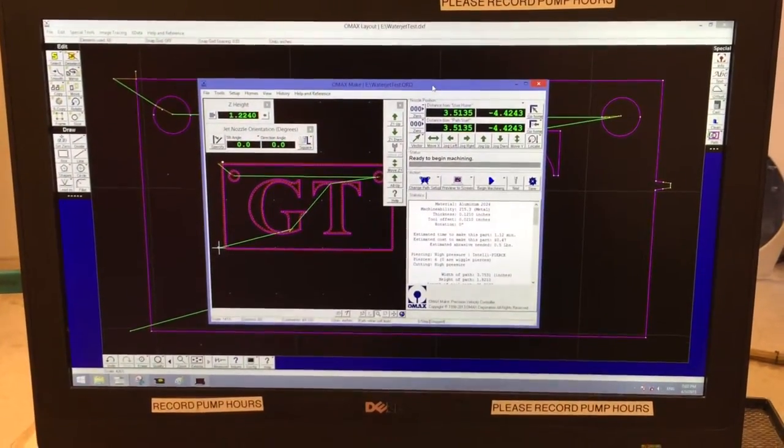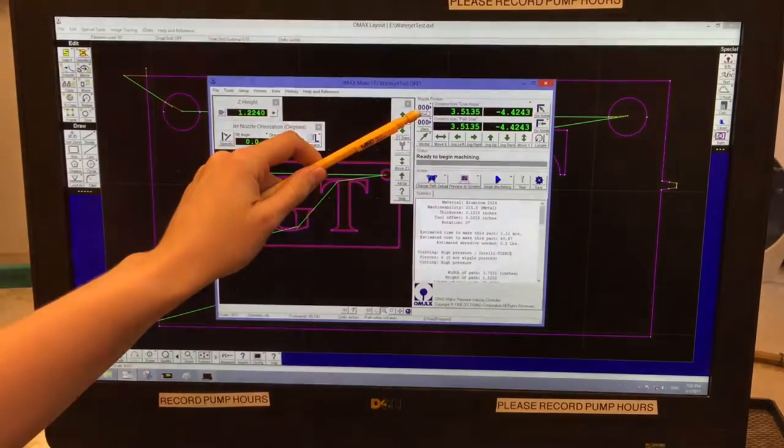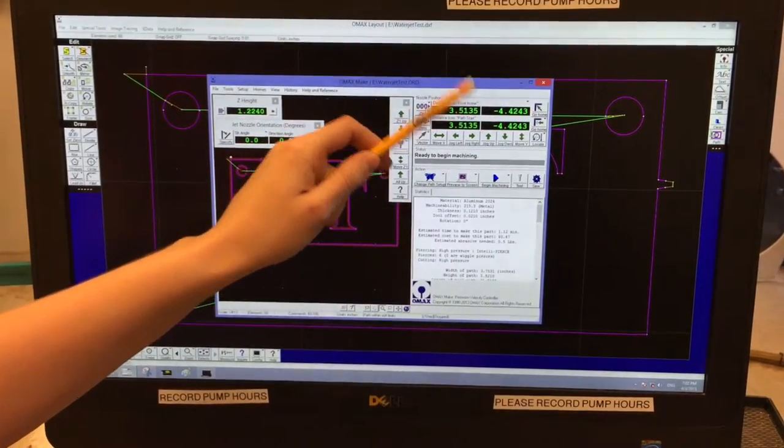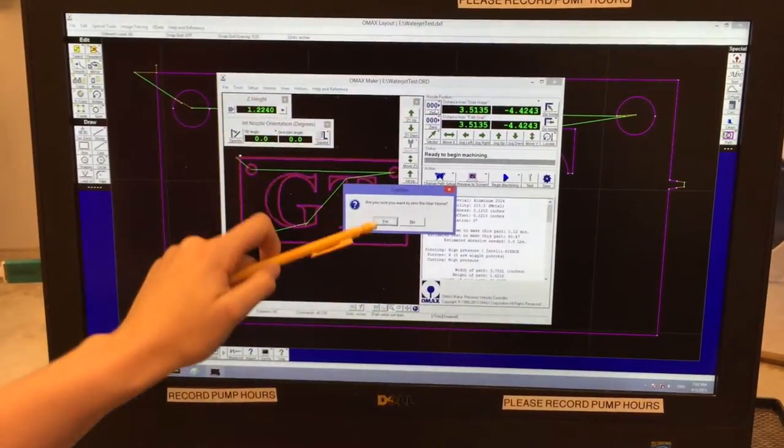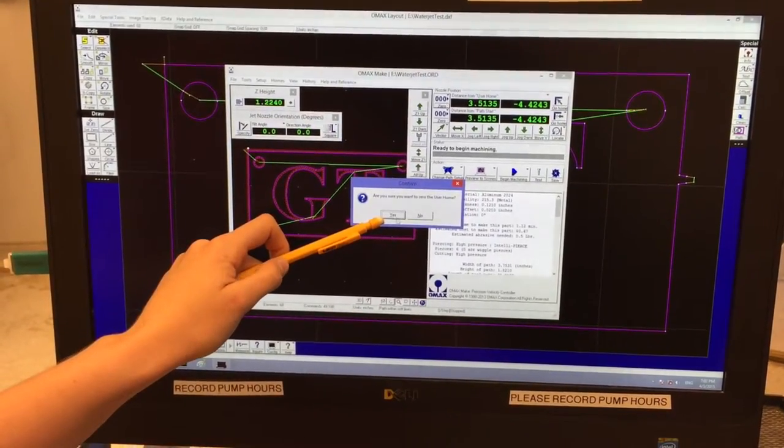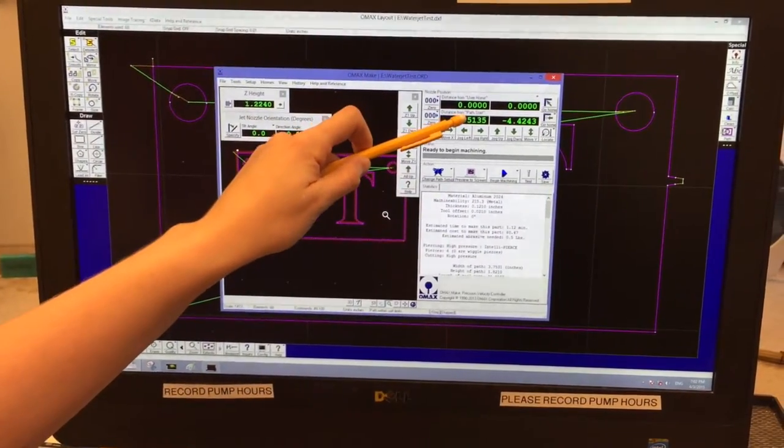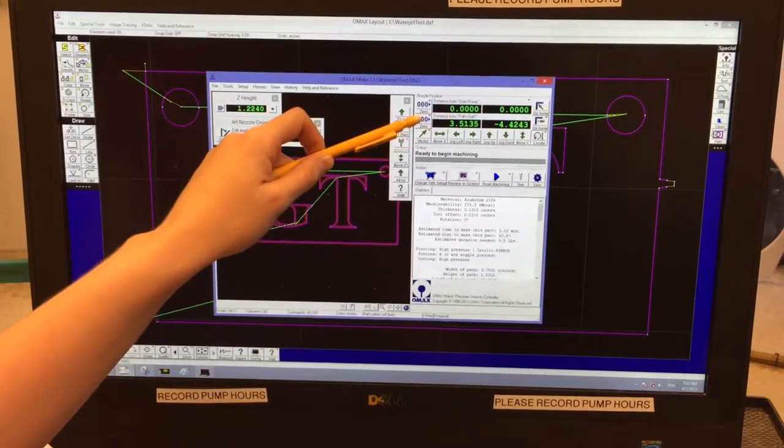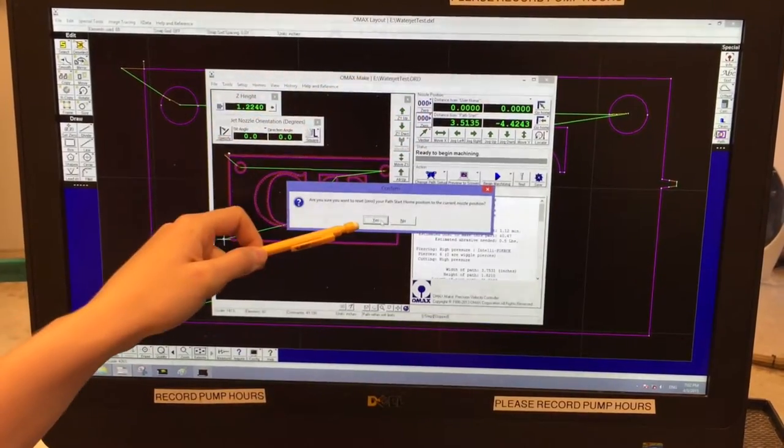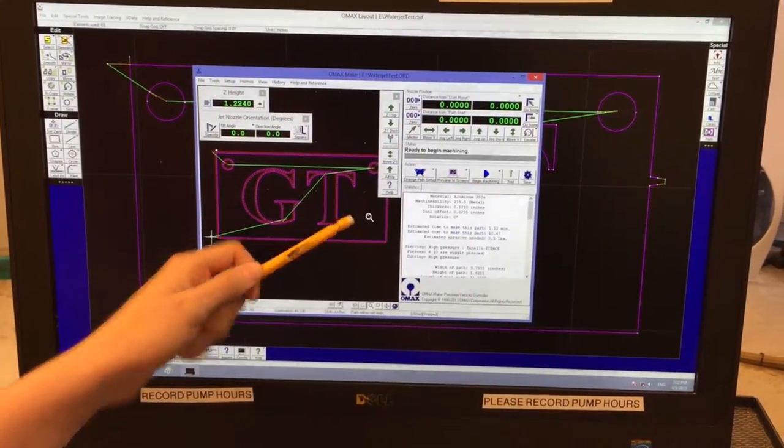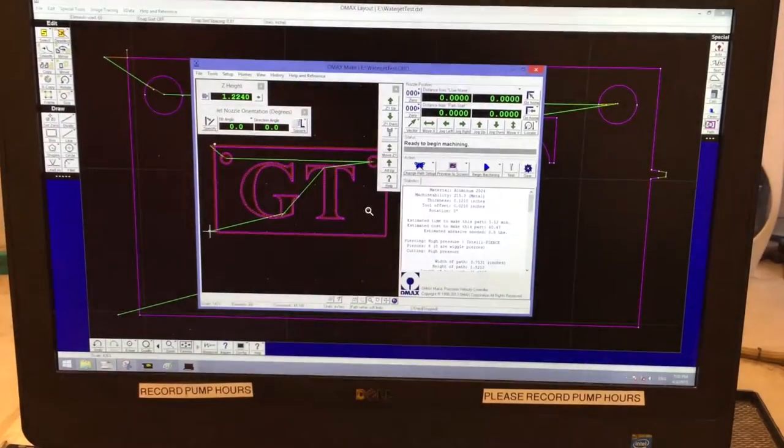Once you've found a good starting position, you'll click on the zeros here for user home. Click that. It'll ask you if you want to zero the home. Click yes. Do the same thing for path start. Hit the zeros. And reset it. And that is how you set your X and Y home.